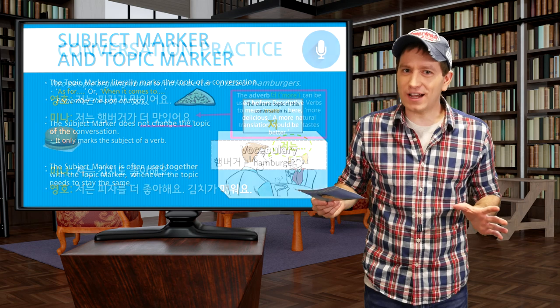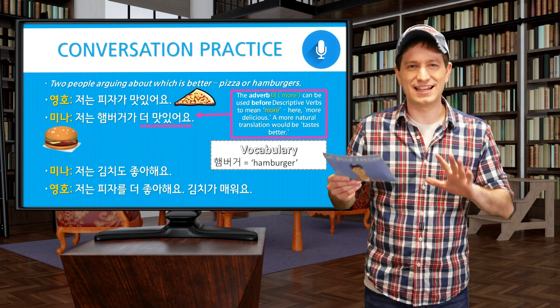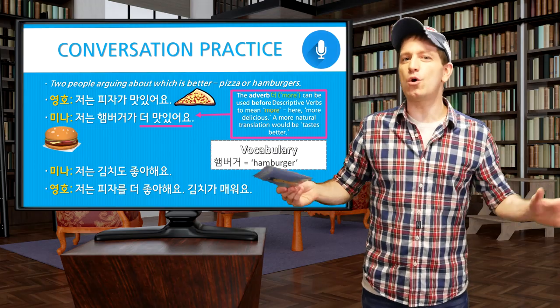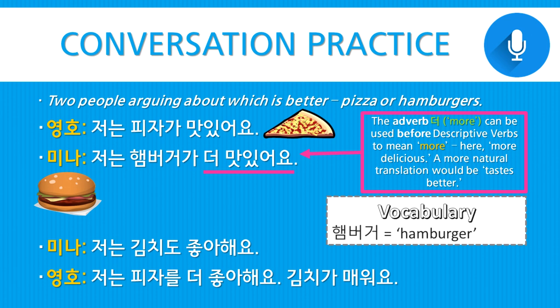So let's do a quick conversation practice between two people, 영호 and 민아. They're arguing about whether pizza or hamburgers is better. First, 영호 says: 저는 피자가 맛있어요 — 'As for me, pizza is delicious.' To which 민아 replies: 저는 햄버거가 더 맛있어요 — 'As for me, hamburgers are 더, more delicious.'